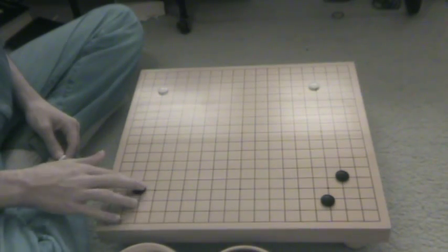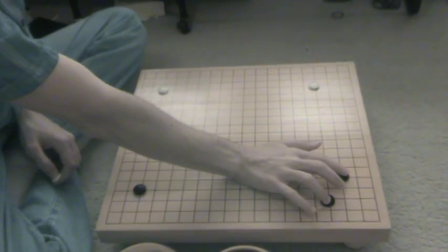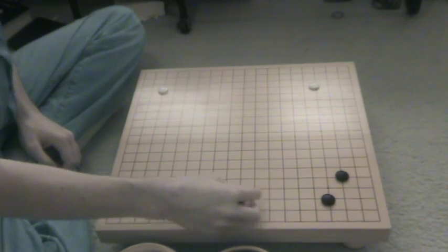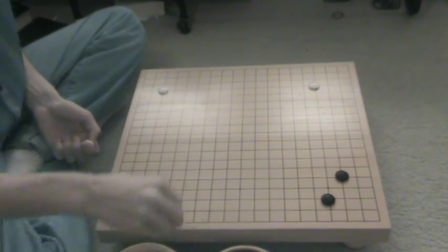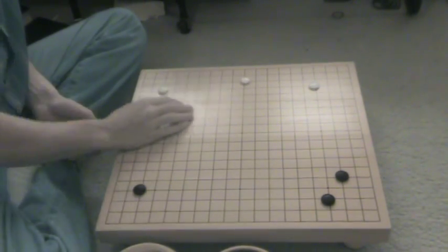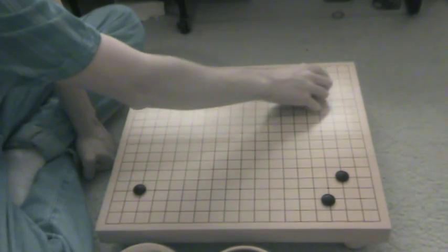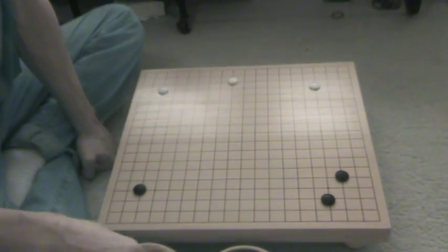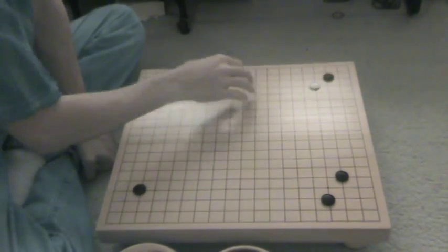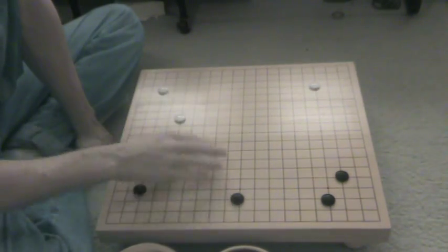The answer is black shimari. Because this shimari wants to go along the side and get some good framework. This star point also wants to go along the side and get some good framework. But the star point, the corner is open. So, even if white goes along the side, black can still take the corner.